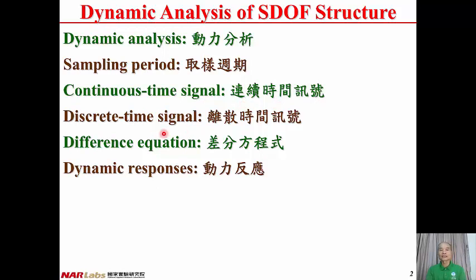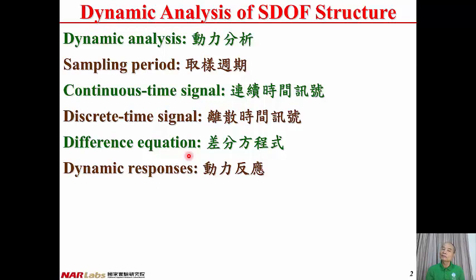Discrete Time Signal: after sampling, the signal becomes discrete in time — in Chinese, Lian Xu Shijian Shunhao. Difference Equation: originally, the motion equation is an ordinary differential equation. After some manipulation, it becomes a difference equation — in Chinese, Cha Fen Fang Cheng Shi. Dynamic Responses: after dynamic analysis, we can follow the dynamic responses of structures, including displacement, velocity, and acceleration.